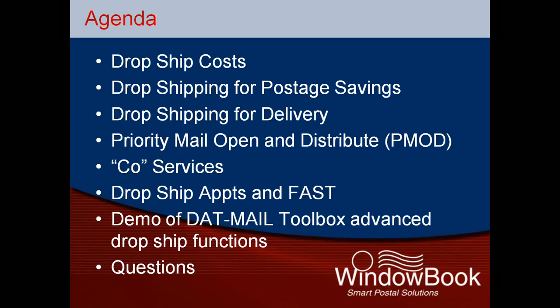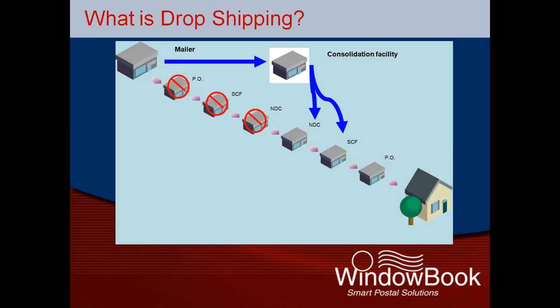Keep in mind, we will just be touching briefly on PMOD and FAST, as we have separate webinars on both of these topics coming up in the near future. Just to quickly review from the basics webinar, dropshipping bypasses a number of postal transportation and processing steps. Mail is typically dropshipped to one of the following types of postal facilities: a Network Distribution Center, or NDC — these are formally known as Bulk Mail Centers.